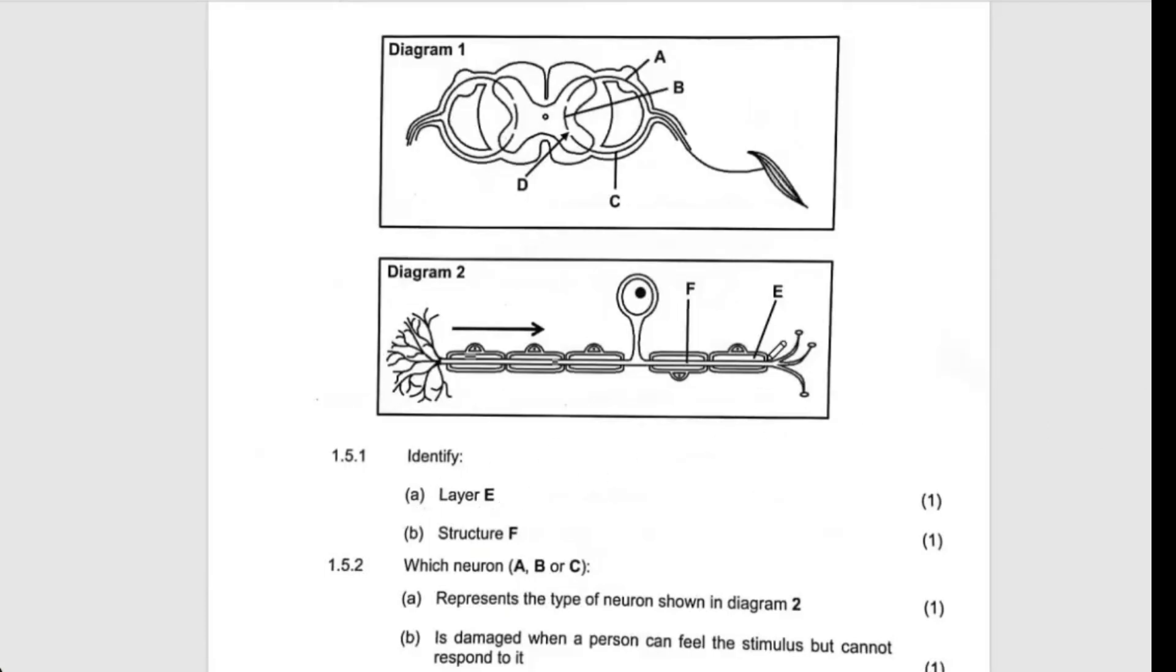Now let's start answering. Layer E, we have seen it is myelin sheath. Structure F, it is axon because it is after the cell body.